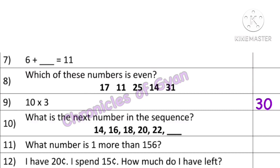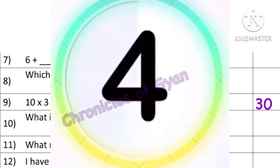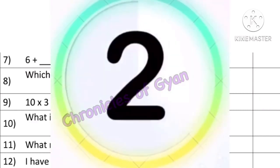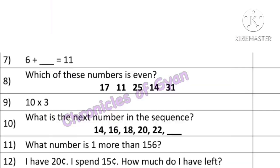Question 10: What is the next number in the sequence? As you can see, the numbers are 14, 16, 18, 20, and 22. That means plus 2 is added after every number. So 22 plus 2 would be 24. Hence, the number after 22 is 24.